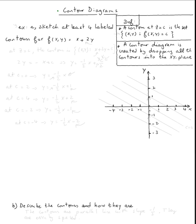The topic is contour diagrams. So let's do this example: sketch at least four labeled contours for f of x, y equal x plus two y. So let's read the definition of what a contour is. By the way, contour or level curve is exactly the same thing.